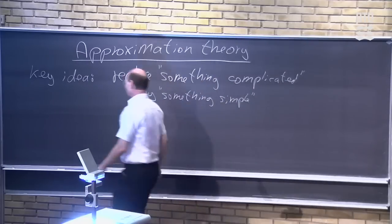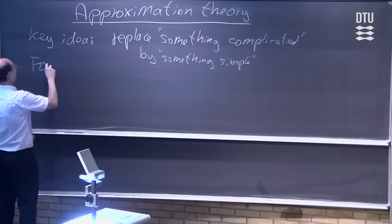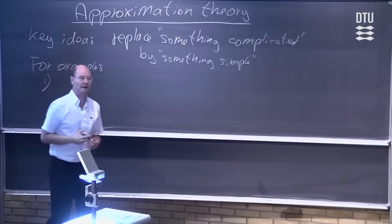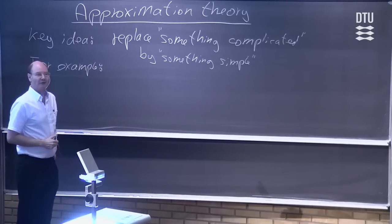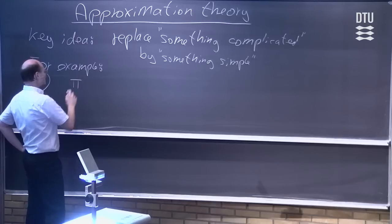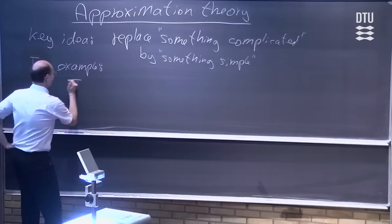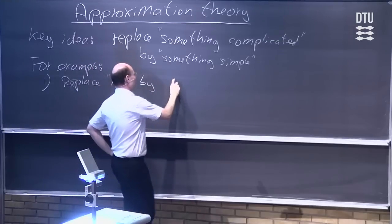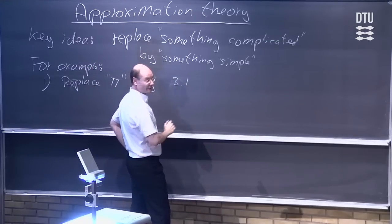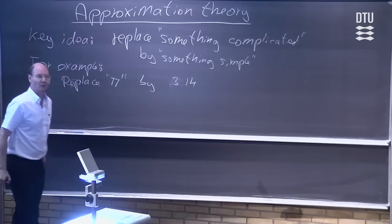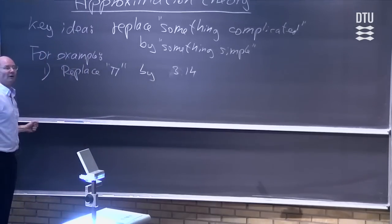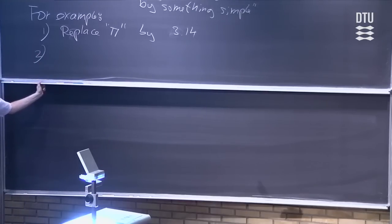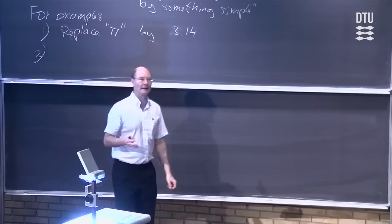The very first example could be something you did already in public school — I think it was in fifth grade that you learned about the number pi. What you already did at that time was to replace pi by something like 3.1, or maybe 3.14, depending on how exact you were. That is probably the very first case you saw of approximation theory. Then in high school you saw more examples: you got the idea of looking at complicated functions and replacing them by a tangent.